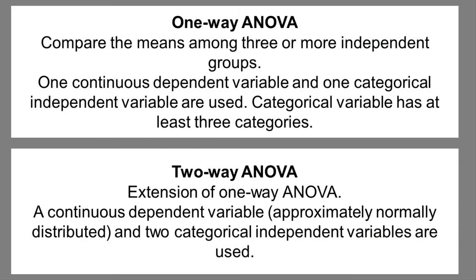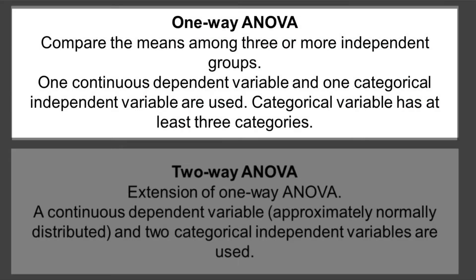There are different types of ANOVAs. There's the one-way ANOVA, where you compare the means among three or more independent groups. On one side you have a continuous dependent variable, and on the other side you have a categorical independent variable. The categorical variable has at least three groups, or you could say you have three or more different groups.